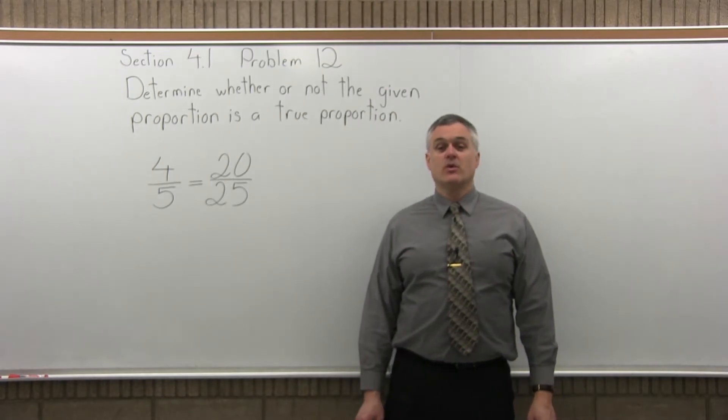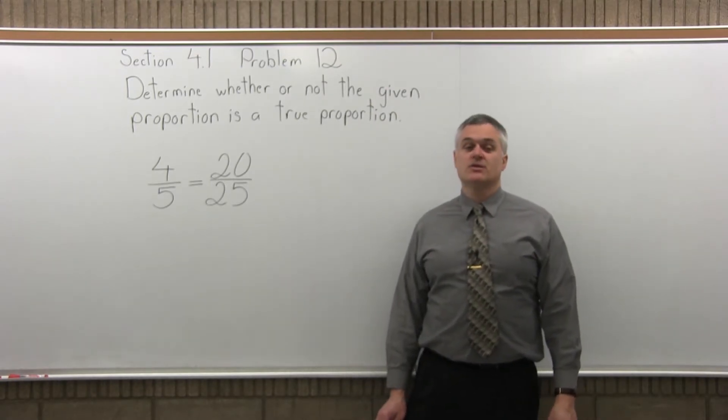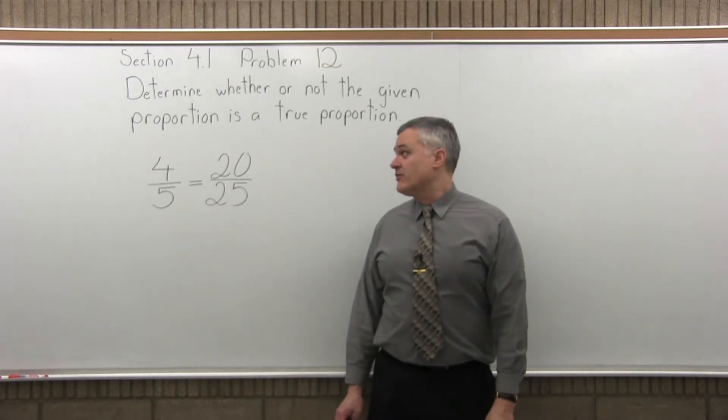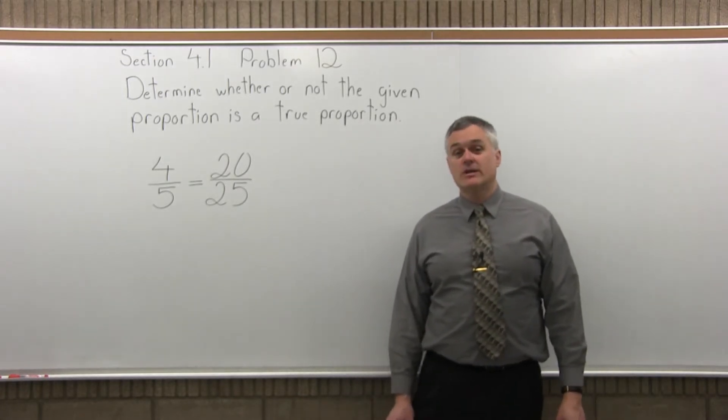This is Section 4.1, Problem 12. It says, determine whether or not the given proportion is a true proportion. And we have 4 over 5 equals 20 over 25.